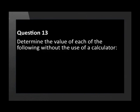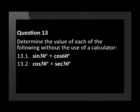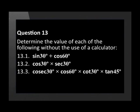The next question uses special triangles and reciprocals. Make sure you know all your ratios. Question 13. Determine the value of each of the following without the use of a calculator: sin 30 degrees plus cos 60 degrees, cos 30 degrees multiplied by sec 30 degrees, cosec 30 degrees multiplied by cos 60 degrees multiplied by cot 30 degrees multiplied by tan 45 degrees.